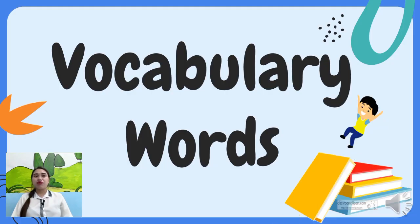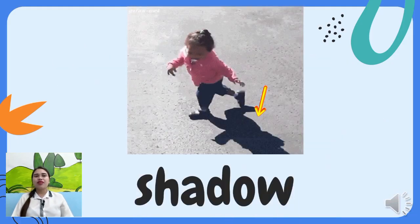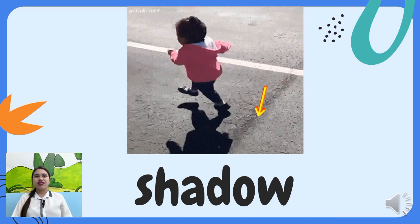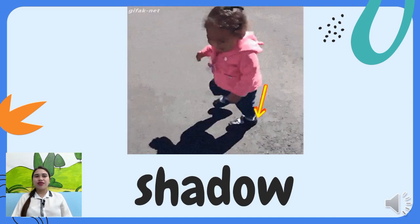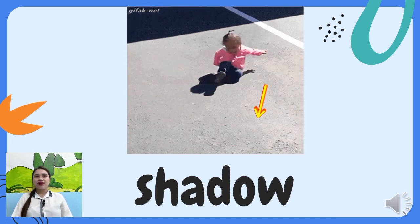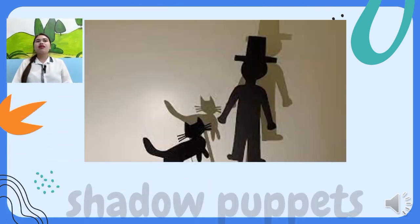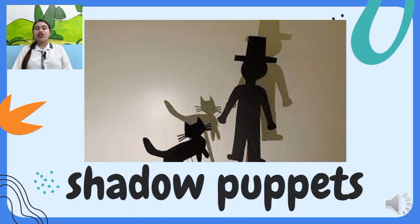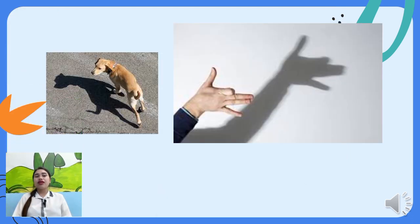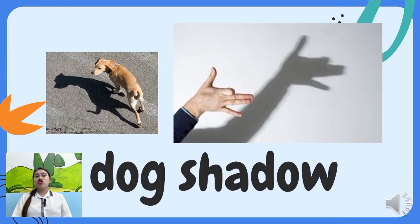The vocabulary words are: Shadow puppet. Dog shadow.